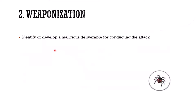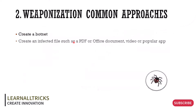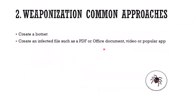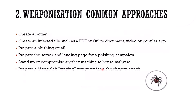With weaponization, we're trying to identify how we will deliver our payload — what we will create or use that will allow us to deliver the attack. We're going to identify or develop a malicious deliverable. It could be an exploit with a backdoor. Some common approaches: use a botnet — you can rent botnets by the hour — create an infected file like an infected PDF, Office document, video, or app. Trojanize them, prepare a phishing email, or prepare a server and landing page for a phishing campaign. Let's stand up or compromise another machine to house the malware, or prepare a Metasploit staging computer for a shrink-wrap attack.